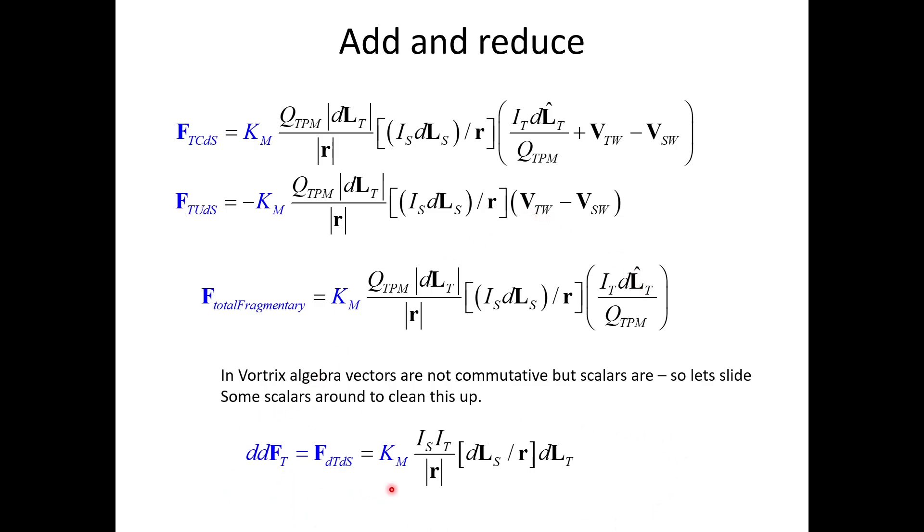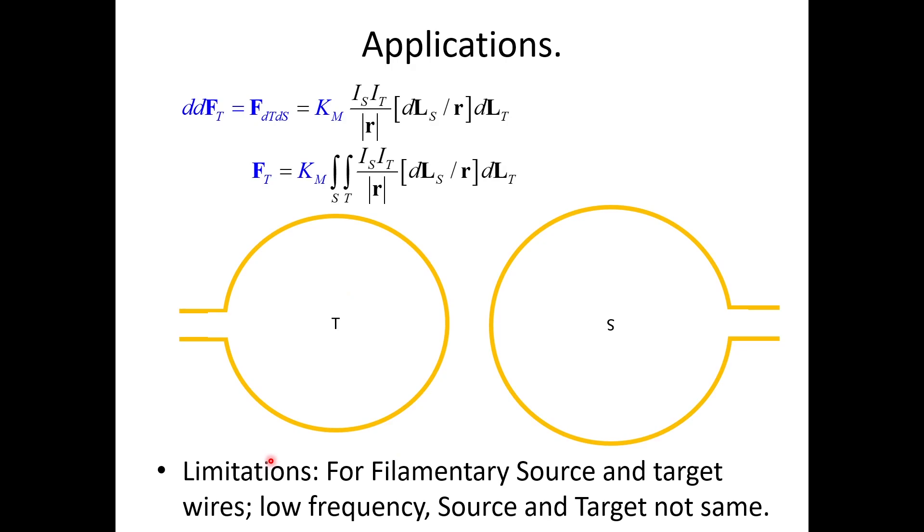This is the fragmentary form. In order to get the full force on the target charge, we have to integrate all the fragments over the source loop and over the target loop. This nomenclature here, these dd, means it requires a double integral to reduce this to normal force. So this is like a double derivative of the force. This is an alternate notation for this, which I'm not really happy about. I think this is the best one to use. So we take our fragmentary force model here and integrate over all the fragments in the source and all the fragments in the target. This would be the total force between these two loops.